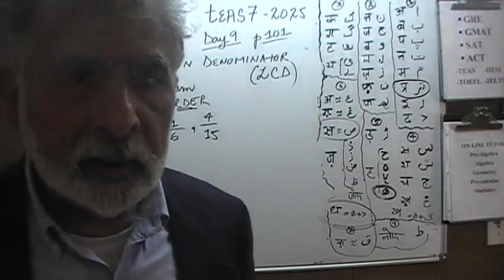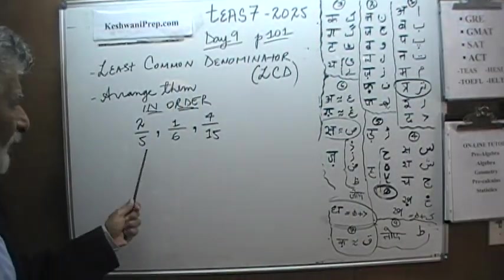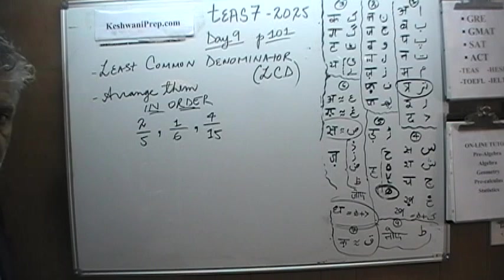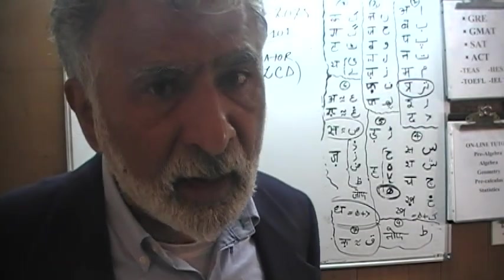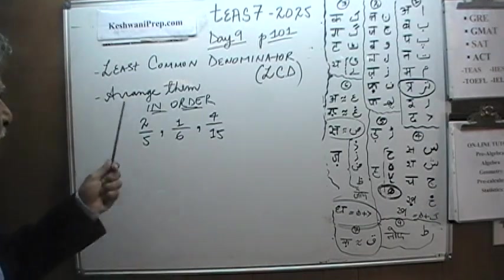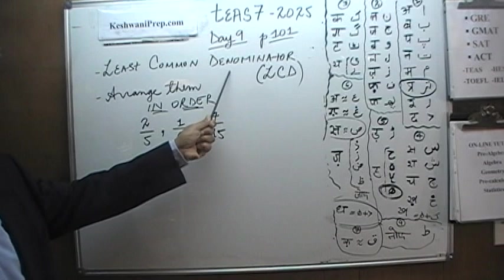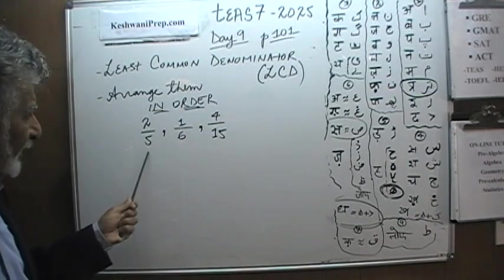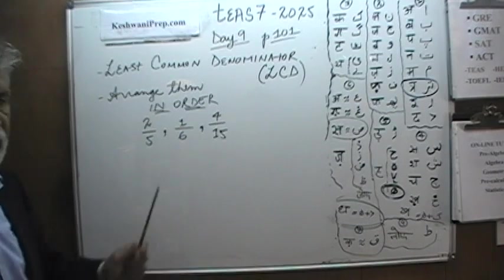The only way we can compare fractions is when they have the same bottom, same number that appears in the bottom. The same number that appears in the bottom is called the common denominator. Because the bottom is called the denominator and the denominator has to be the same for all of them. What is the least number that we can think of that is a multiple of 5 and 6 and 15? That's the question.